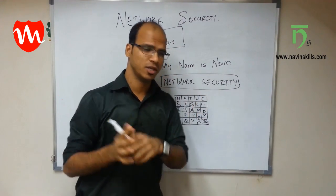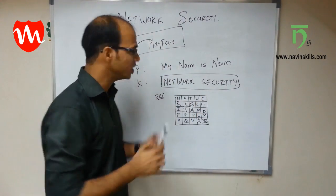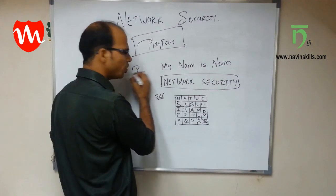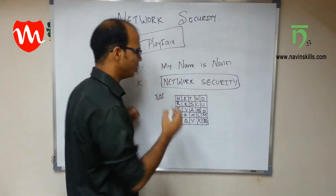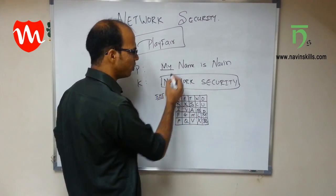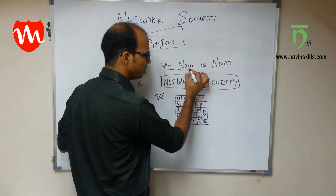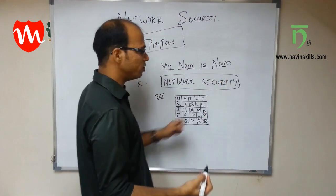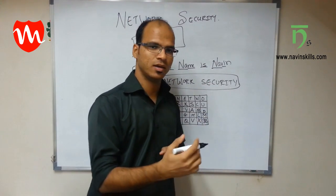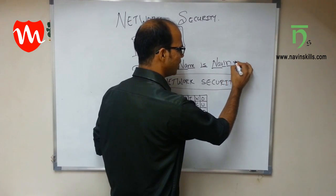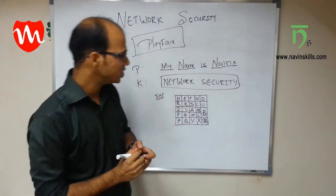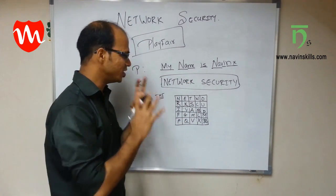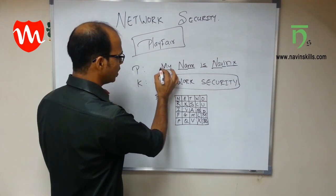Once the matrix is ready, the next step is to take your plain text and create pairs. For 'my name is navin': M-Y, N-A, M-E, I-S, N-A, V-I. The last character N has no pair, so add X to make it a pair: N-X. Now we have all pairs ready.